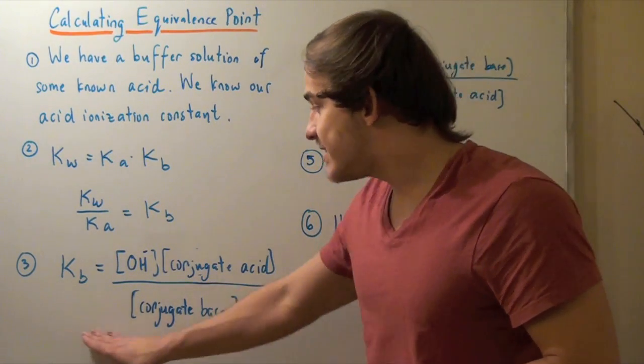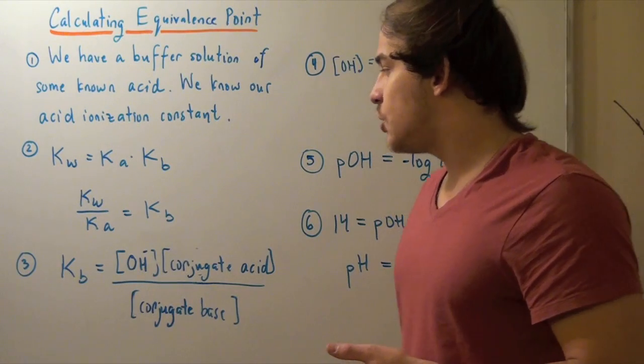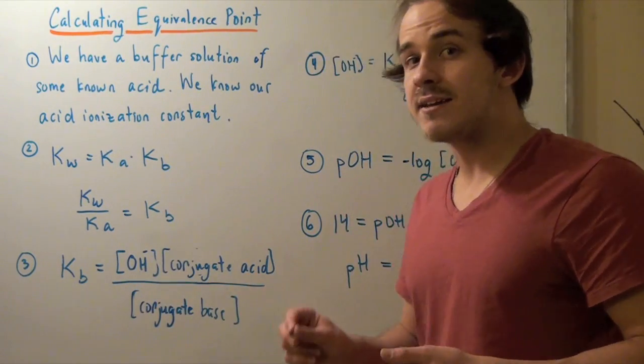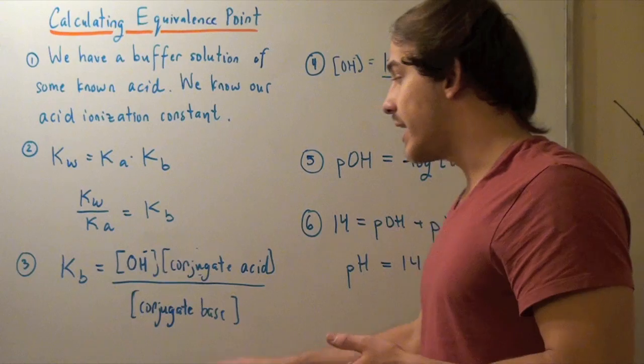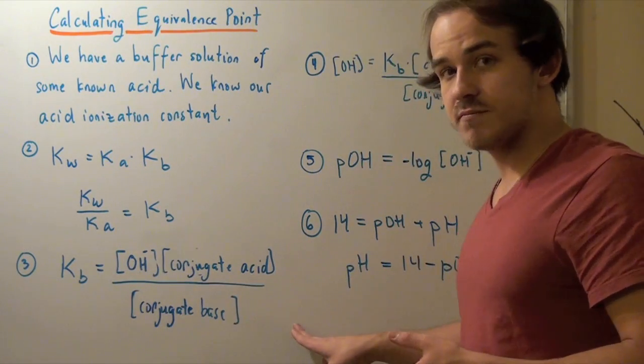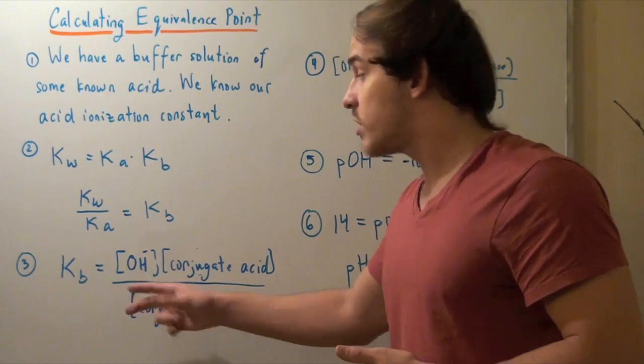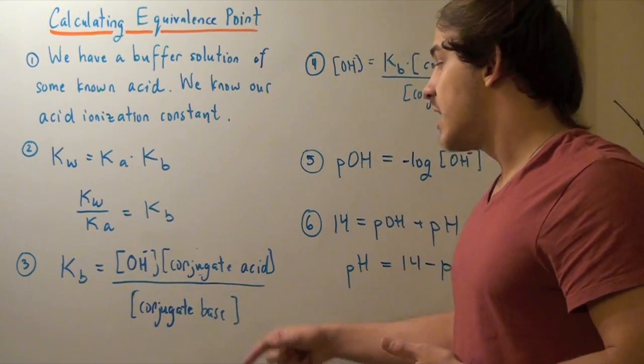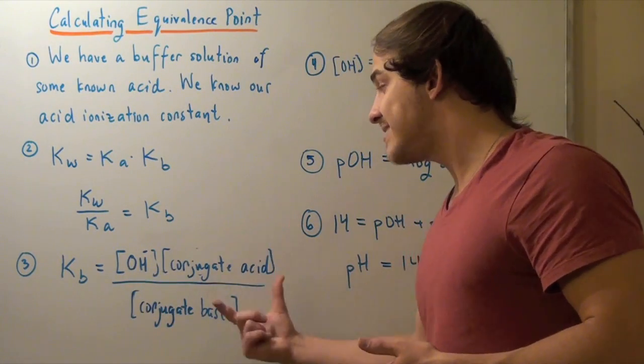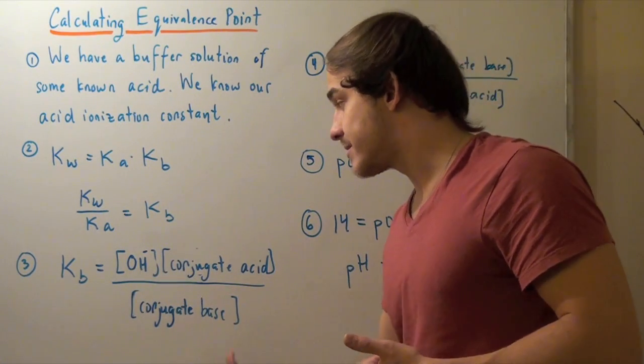So, in my second step, I basically use the Kb, or the base ionization constant. I equate that to my equilibrium expression, which states that the concentration of hydroxide, what I'm looking for, equals the concentration of the conjugate acid over the concentration of the conjugate base.